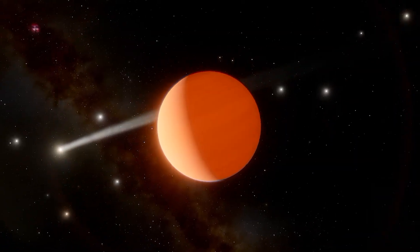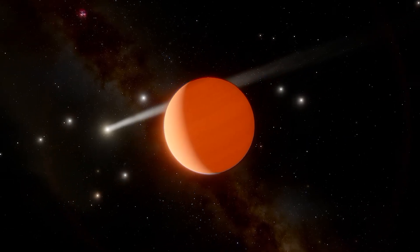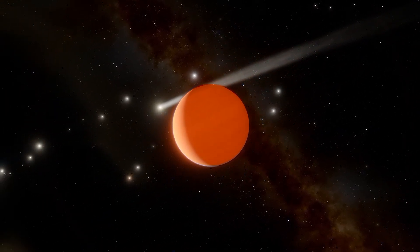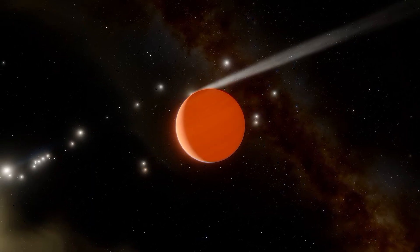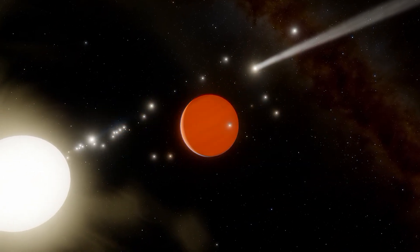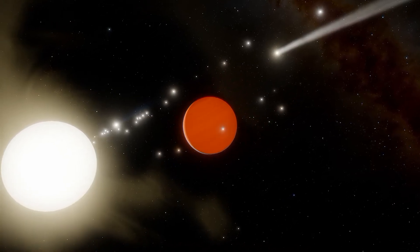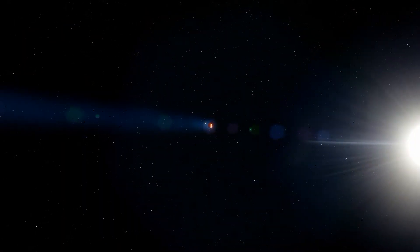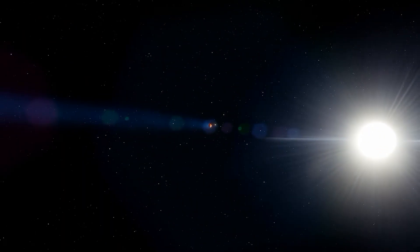Without Saturn being there to reverse this process, it's easy to imagine Jupiter having continued inwards, eventually becoming a hot Jupiter. This theory is known as the grand-tack hypothesis and poses that multi-planet dynamics can prevent hot Jupiter formations. Systems with only one migrating gas giant are thus thought to be more likely to produce hot Jupiters than complex systems like our own solar system.